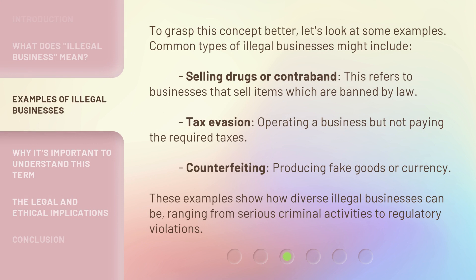To grasp this concept better, let's look at some examples. Common types of illegal businesses might include: selling drugs or contraband — businesses that sell items which are banned by law; tax evasion — operating a business but not paying the required taxes; and counterfeiting — producing fake goods or currency. These examples show how diverse illegal businesses can be, ranging from serious criminal activities to regulatory violations.